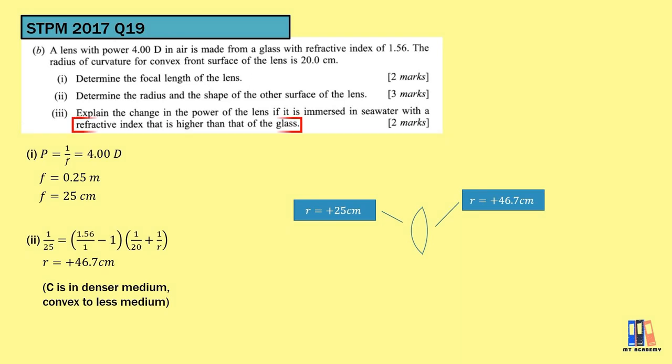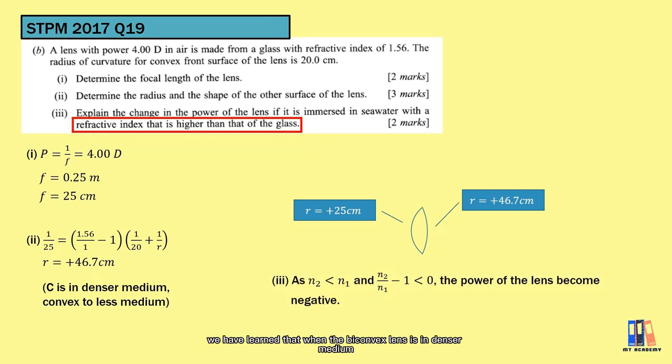Now, we look at the third question. Explain the change in the power of the lens if it is immersed in seawater with high refractive index. From previous question, we have learned that when a biconvex lens is in denser medium, n1 more than n2, the calculation from n2 over n1 minus 1 will be a negative value. Hence, we have negative focal length, and the power of the lens will become negative.